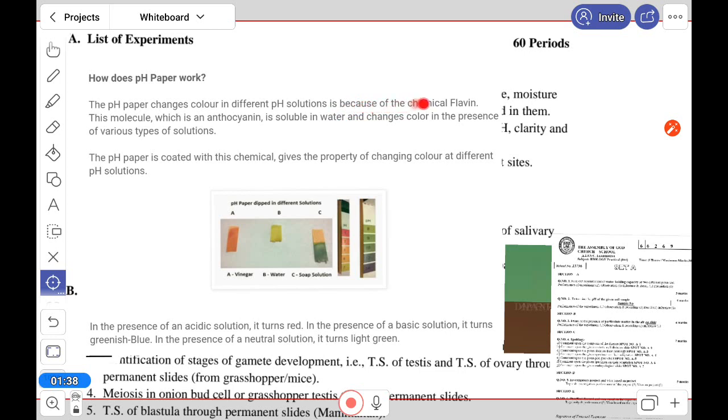This color change is because of the chemical flavin. This molecule, which is an anthocyanin, is soluble in water and changes color in different solutions. The pH paper is coated with this chemical, which gives it the property of changing color in different pH solutions. I won't go into more details about this.